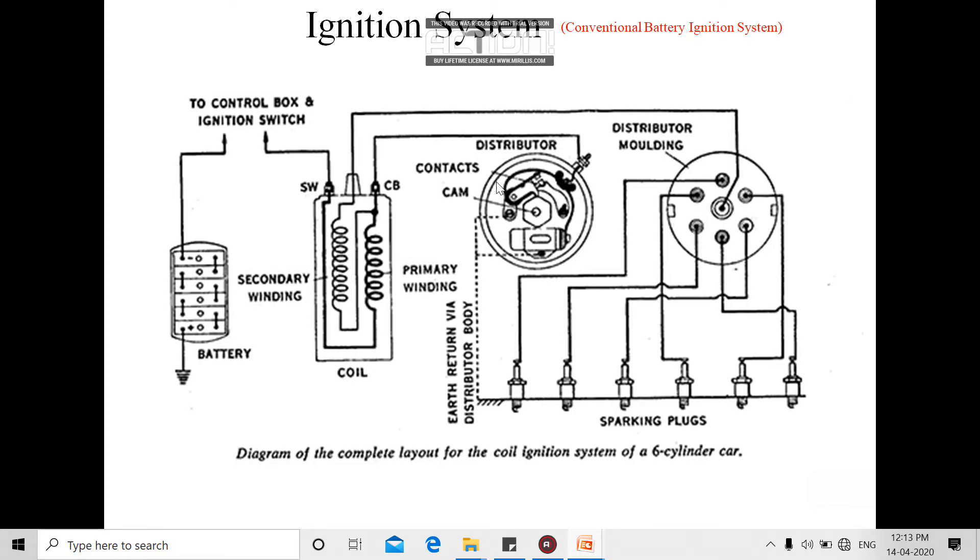Now go to the secondary winding. One end of the secondary winding is connected to the primary winding. Another end is coming out through the ignition coil and enters to the distributor central cap or central rotor. This distributor rotor has one needle which is not shown here.